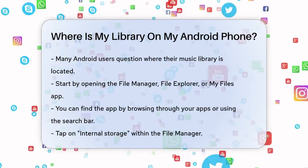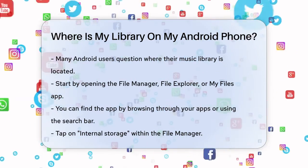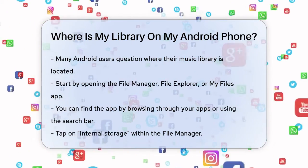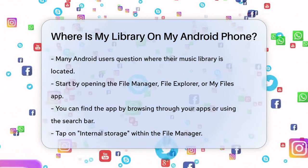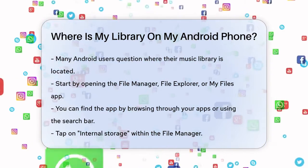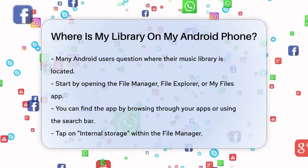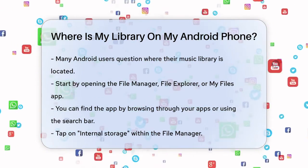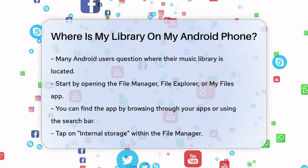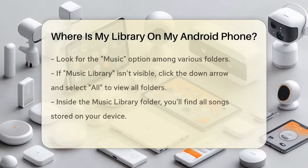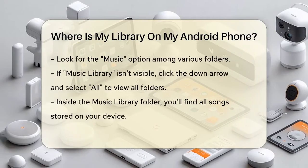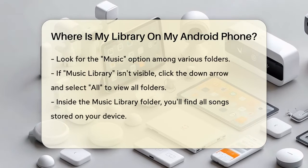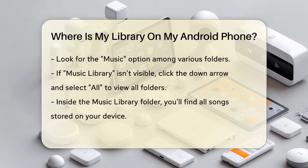First, you need to open the File Manager, File Explorer, or My Files app on your Android phone. You can find this app by browsing through your apps or using the search bar. Once you're in the File Manager, tap on Internal Storage. Here, you'll see various folders, and you need to select the Music option.